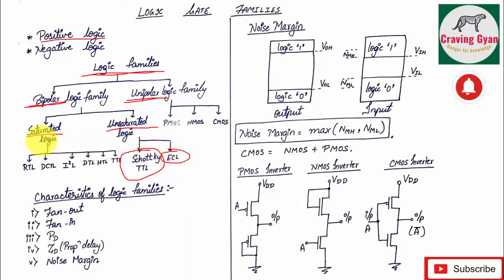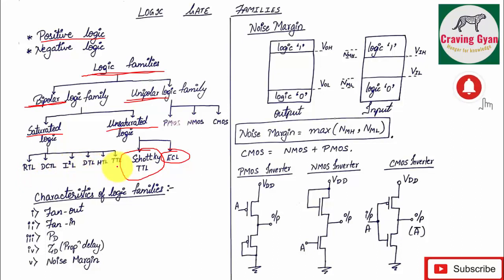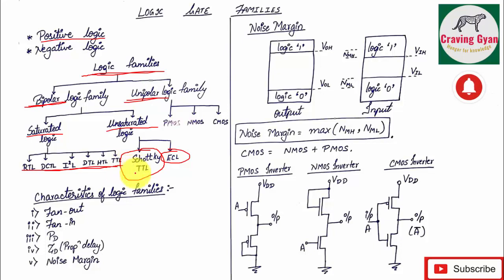In the case of ECL logic also, the transistor will never get into the saturation region, hence it falls under unsaturated logic. Whereas all other transistor logic — RTL, DCTL, I²L, DTL, HTL, and TTL — the transistor operates in the saturation region, linear region, as well as cutoff region. Schottky and ECL will operate only in the linear region and cutoff region.